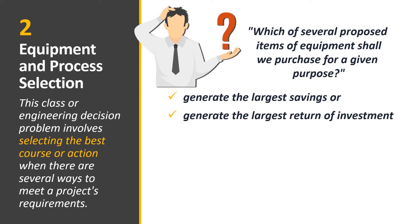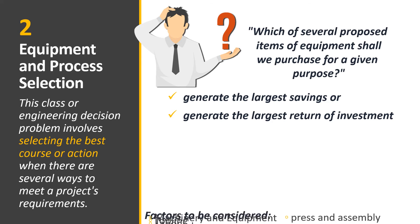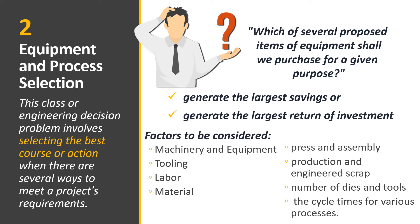Factors to be considered include machinery and equipment, tooling, and labor. Among different courses of action, the cost of labor and materials may vary. Other considerations include press and assembly, production and engineered scrap, number of dies and tools, and the cycle times of various processes. That is the role of an engineer in equipment and process selection.